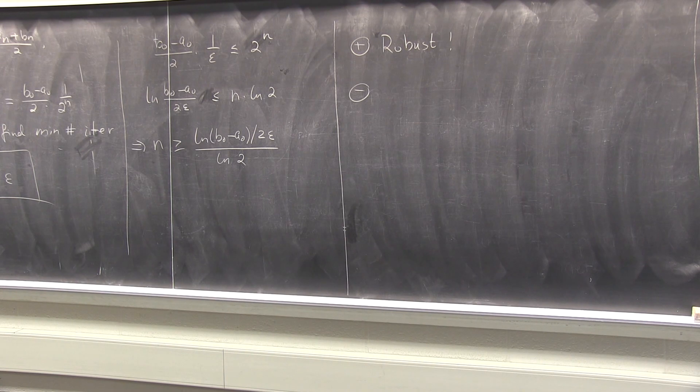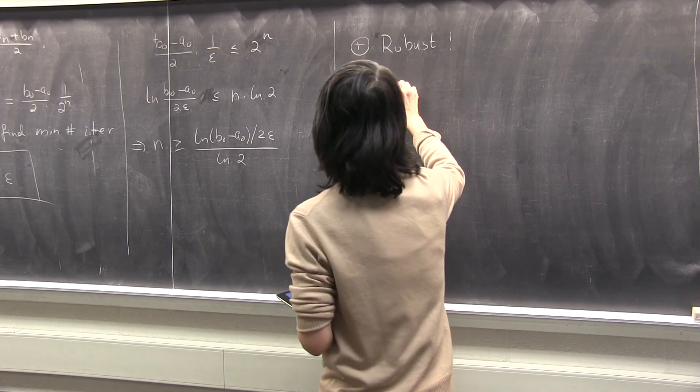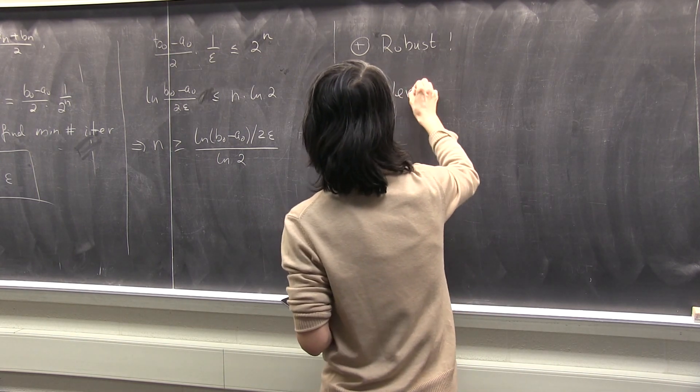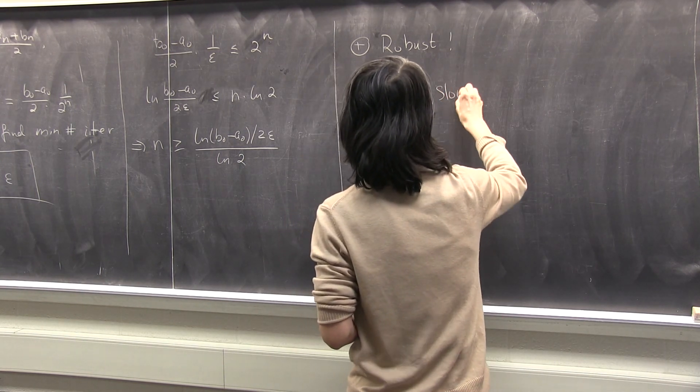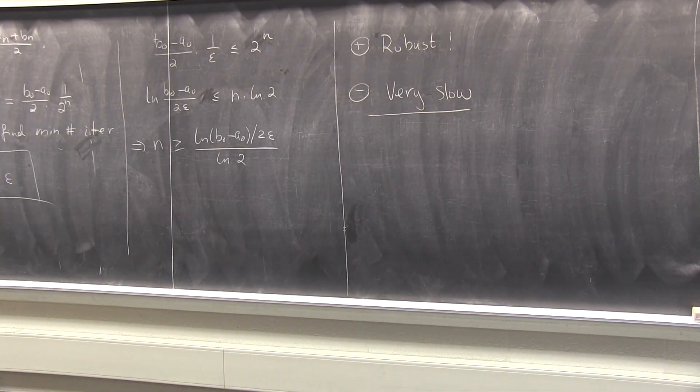And later on, we will learn some method that will converge, if it converges, in three, four iterations. Extremely fast. So comparing to those future methods, which we don't know yet, this is very slow, actually. It's a very simple method. So of course, this is the first method, cannot be the best, right? So the topic will heat up, it will get very hot in a couple of classes.